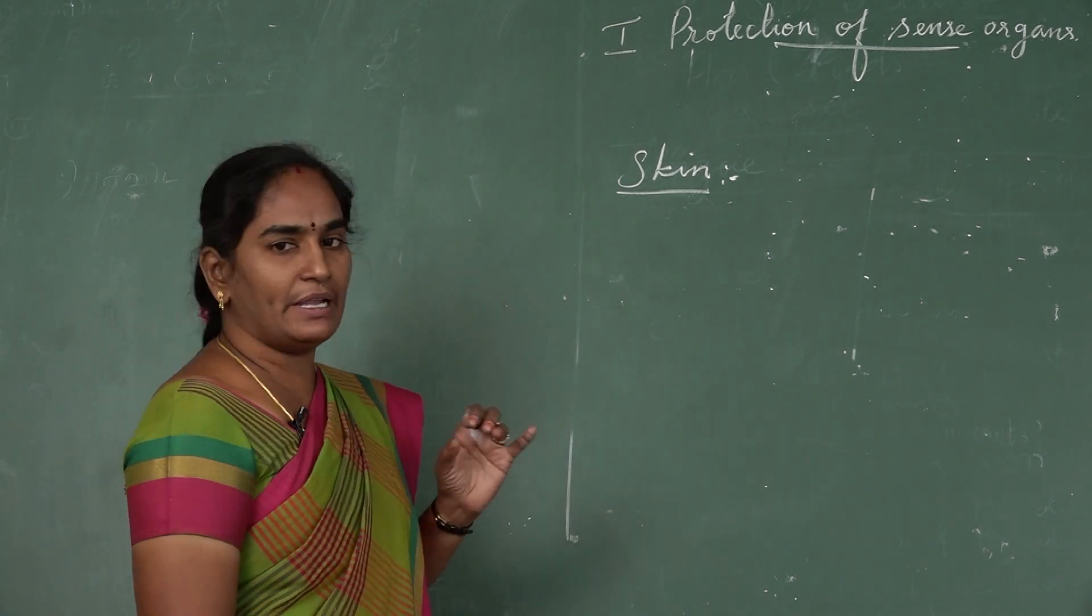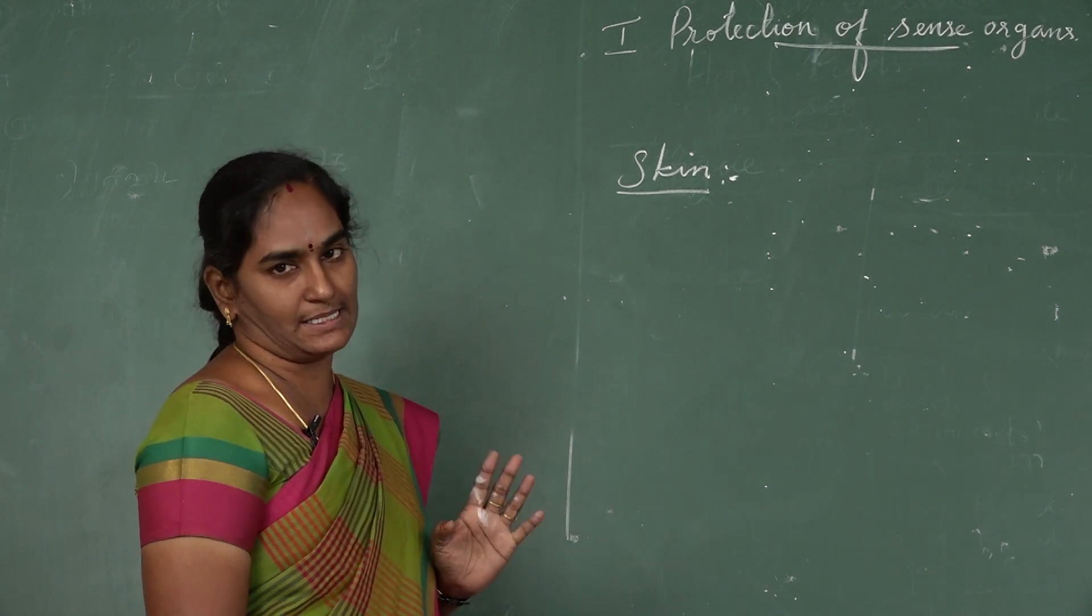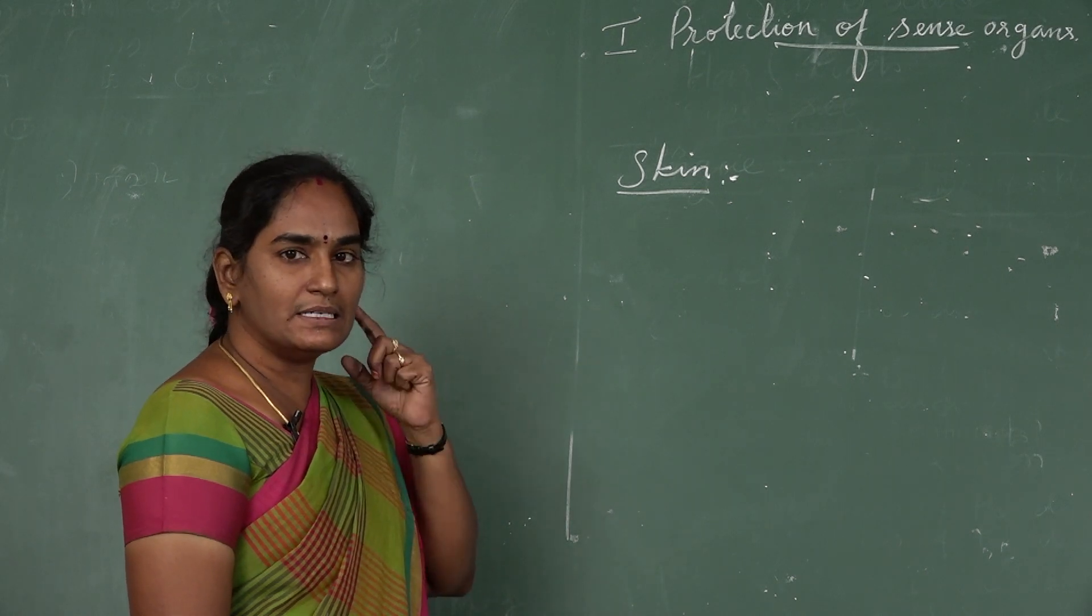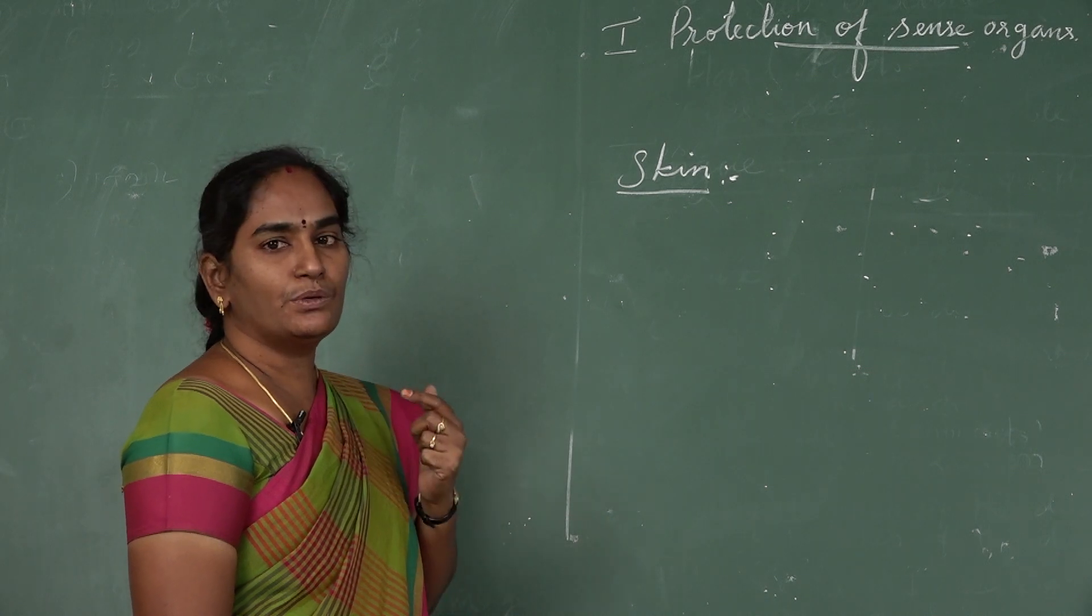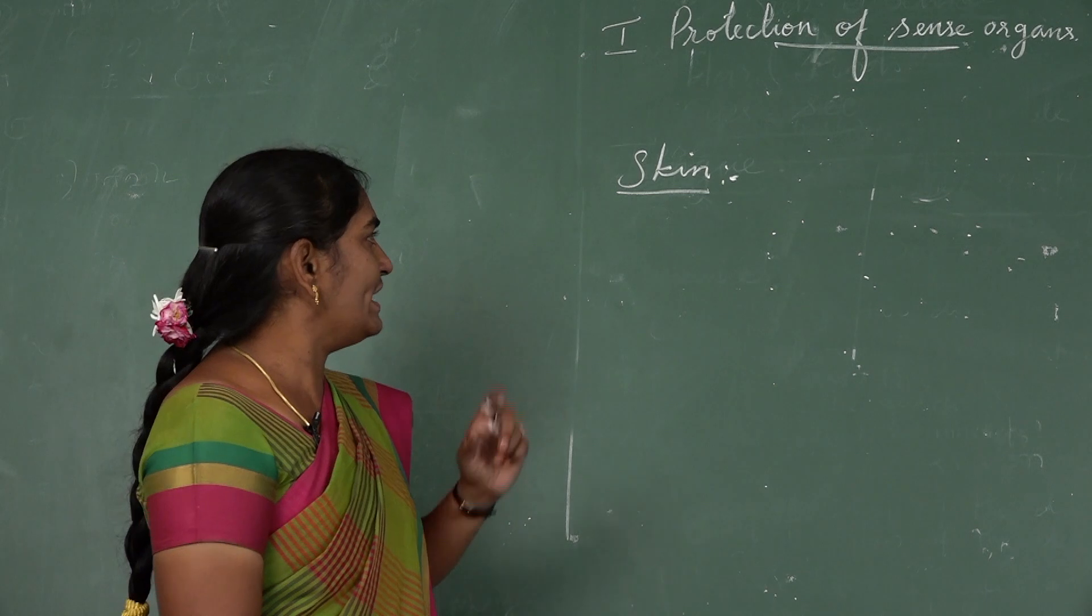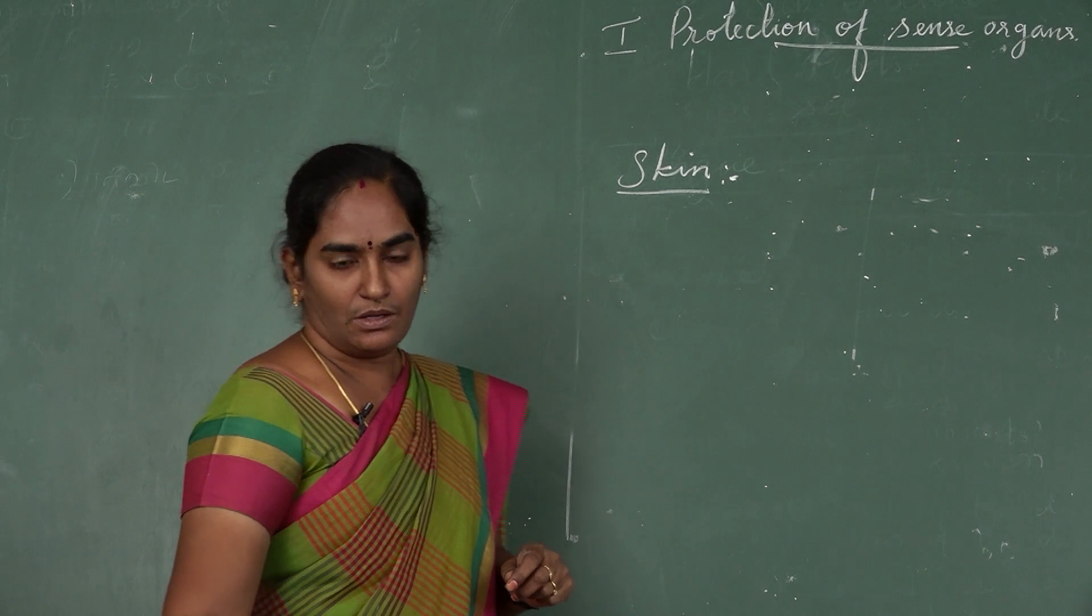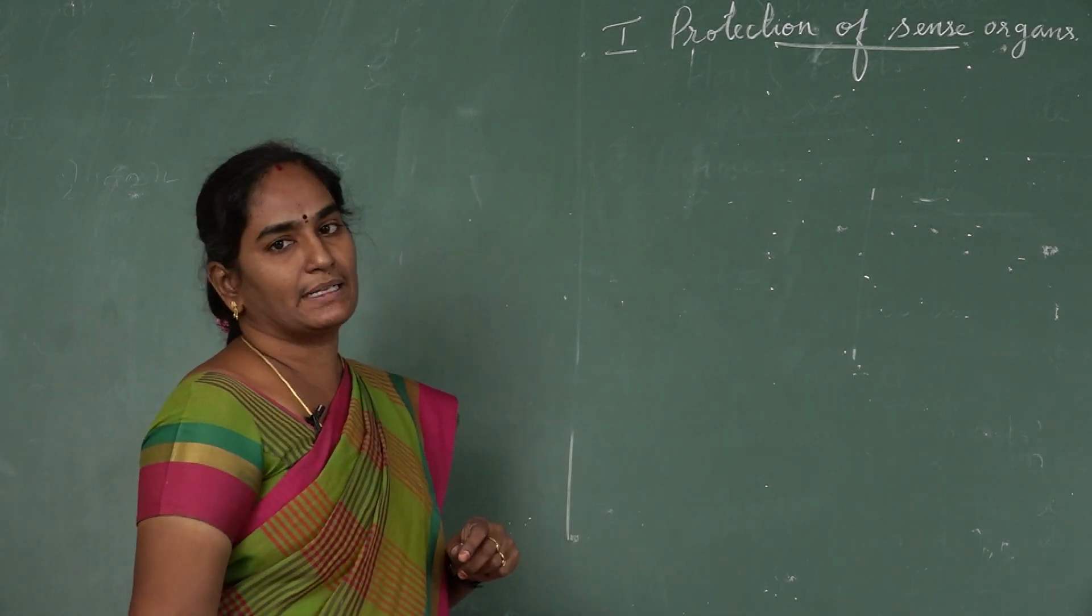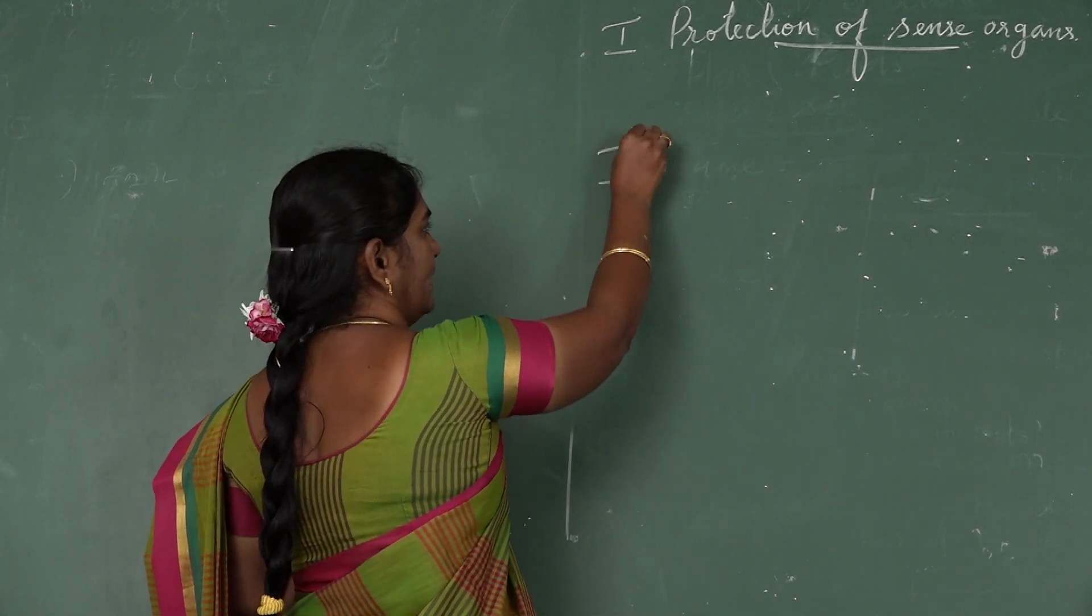Now I explained how to protect the sense organs. If you have any problems, you want to consult the particular doctors. If you have any eye problems, consult an ophthalmologist. If you have any problem with your ears, nose, tongue or throat, go to ENT specialist. If you have any skin problem, go to the dermatologist. Okay, with this I completed how to protect the sense organs.